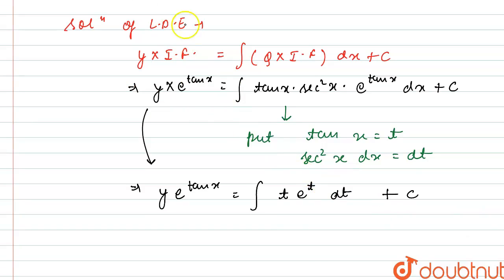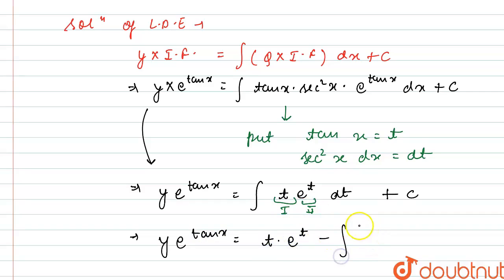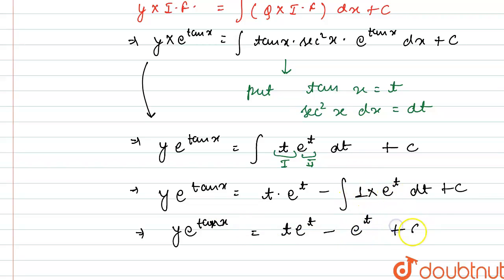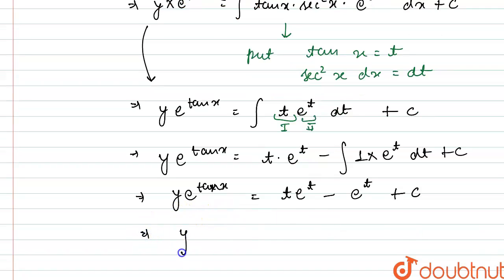We solve the integral of t · e^t dt using integration by parts, taking t as the first function and e^t as the second. This gives: t · e^t − integral of (1 · e^t) dt. So we get y · e^(tan x) = t · e^t − e^t + C.